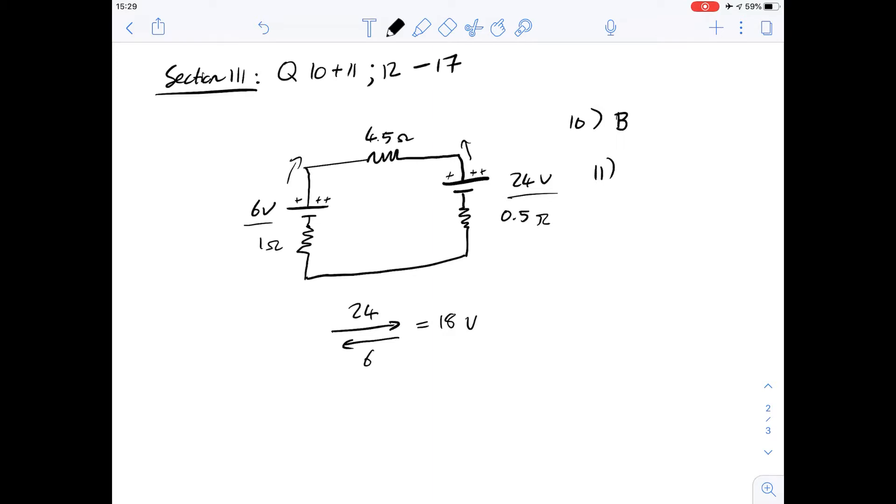Then number 11 is what is the current flowing in the circuit? Well we have an equation to work that out and it's V equals IR. We know the voltage because we've just got that and we know that's going to be 18 volts. The current is I and the resistance is the sum of all the resistances in this circuit because they're all in series, you can just add them up and you get 6. So therefore if you divide both sides by 6 you get a value for the current which is going to be 3 amps and that is answer C.